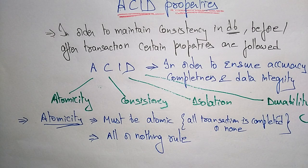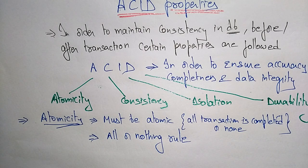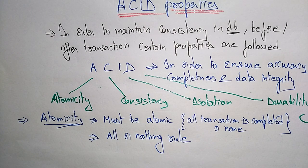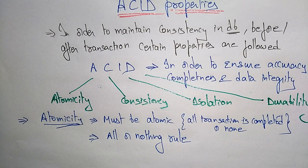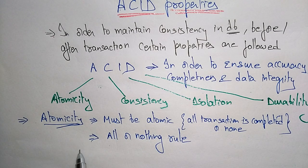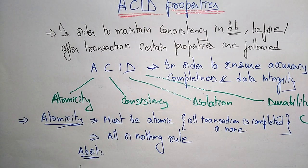If a failure occurs during an operation, the transaction leaves the database unchanged — it reverts to whatever consistent state it was in before. It's all or nothing: either all operations in the transaction are completed, or none are completed. Atomicity involves two operations: abort or commit.